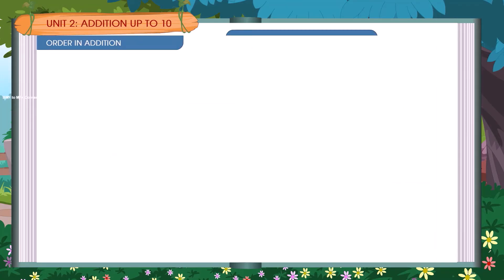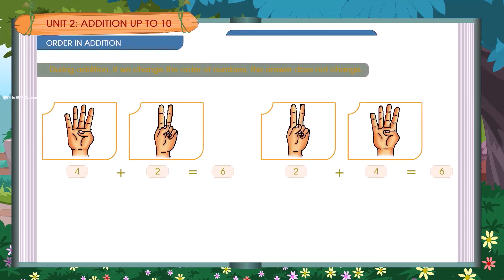Order in Addition. During addition, if we change the order of numbers, the answer does not change. 4 plus 2 is equal to 6. 2 plus 4 is equal to 6. The answer remains the same.